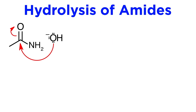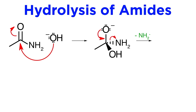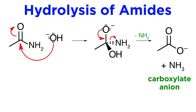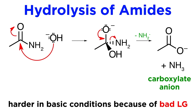Under basic conditions, hydroxide attacks first, yielding the oxyanion. Then the carbonyl reforms, and NH2- is kicked off. This will promptly take the carboxyl proton, yielding the carboxylate anion, which will be protonated during aqueous acidic workup. Hydrolysis is harder to achieve under basic conditions because NH2- is such a bad leaving group.